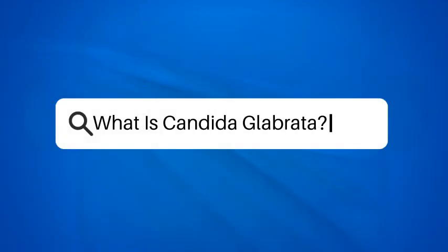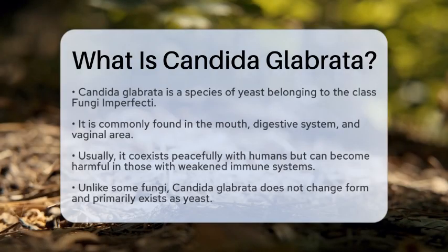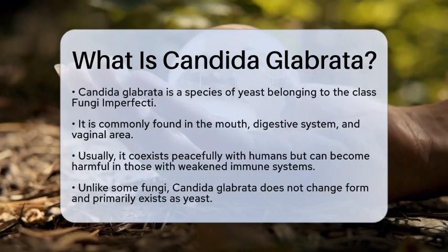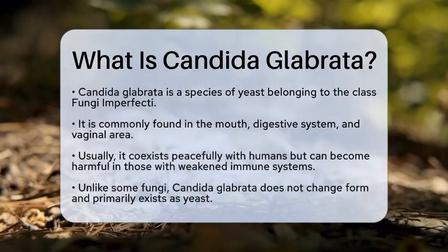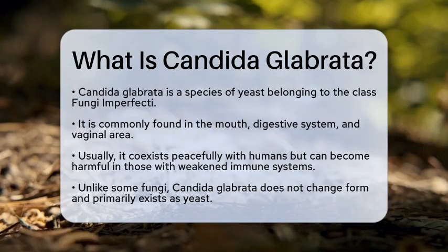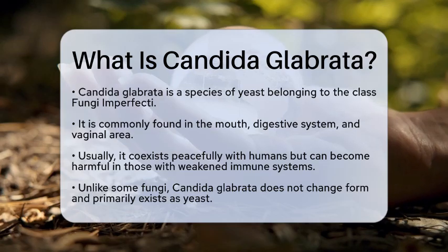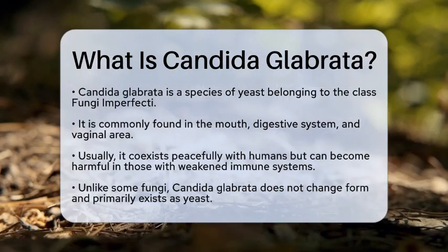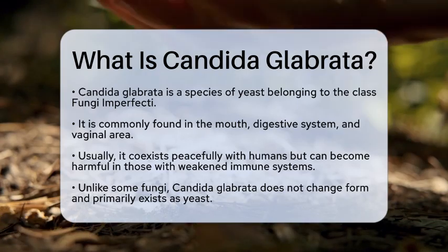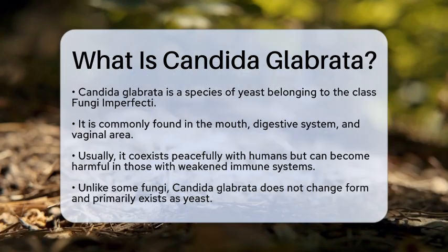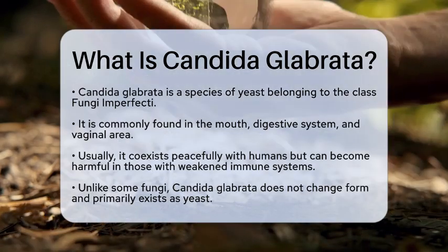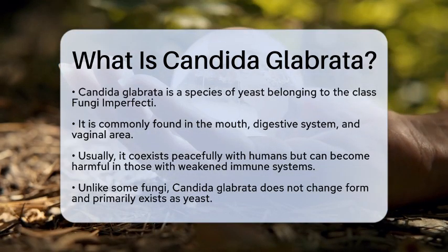What is Candida glabrata? Have you ever wondered about the tiny organisms that live in and on our bodies? One such organism is Candida glabrata, a fascinating species of yeast. This microorganism is part of the class Fungi imperfecti and is commonly found in our mouths, digestive systems, and even in the vaginal area. While it usually coexists peacefully with us, it can turn harmful under certain conditions, especially in people with weakened immune systems.